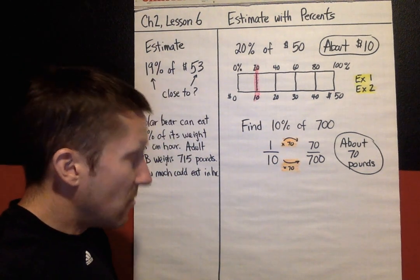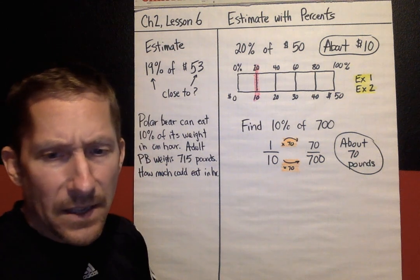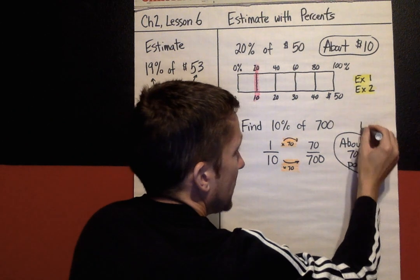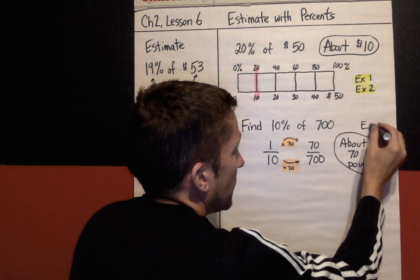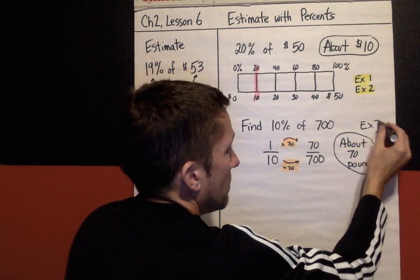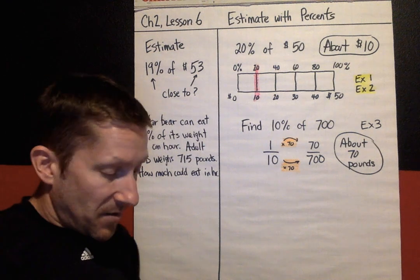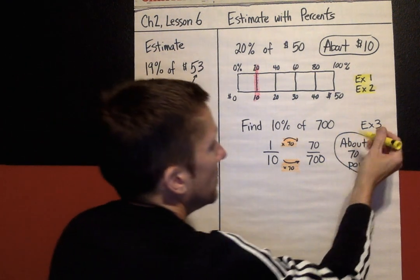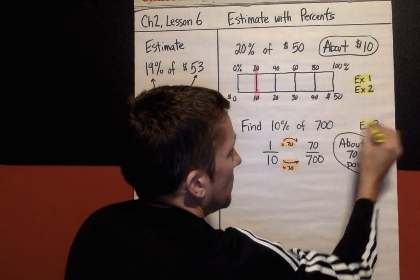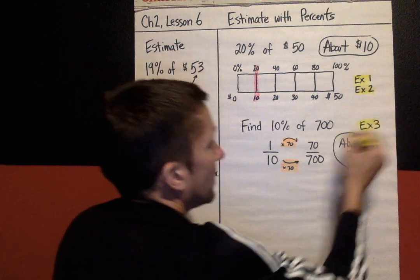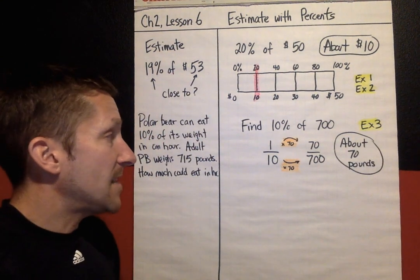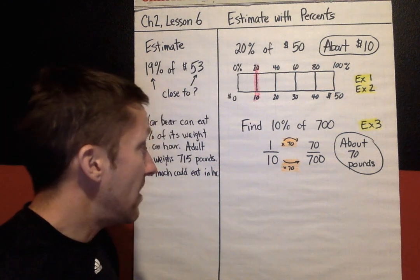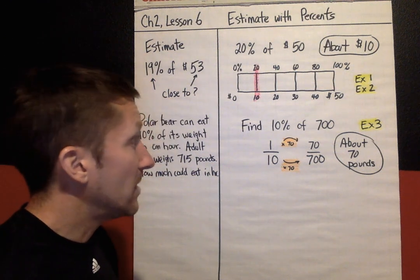In your book, if a problem says Example 3 next to it, try this strategy: setting up an equivalent ratio.